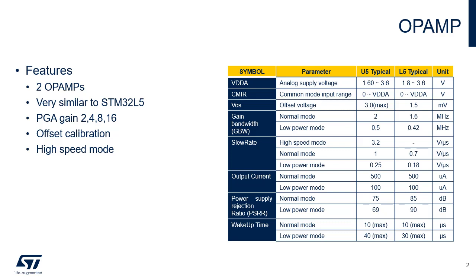By using an internal feedback resistor, the op-amp can also be used as a programmable gain amplifier or PGA. When enabled, it can be in calibration mode, where all inputs and outputs of the op-amp are disconnected, or in functional mode.